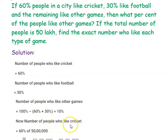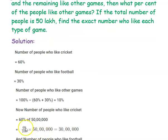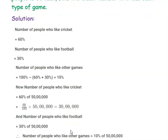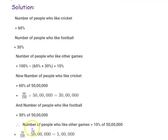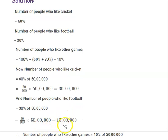Number of people who like cricket is 60 percentage of 50 lakh. So 60 divided by 100, multiplied by 50 lakh, gives 30 lakh. So 30 lakh people in the city like cricket. For football, 30 percentage of the people like football, so 30 percentage of 50 lakh means 30 divided by 100 into 50 lakh, which gives 15 lakh. So 15 lakh people like football in that city.